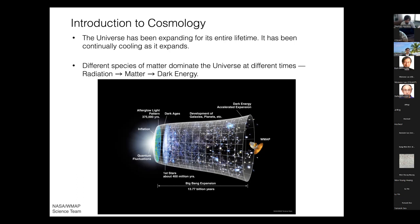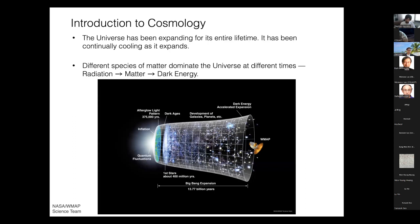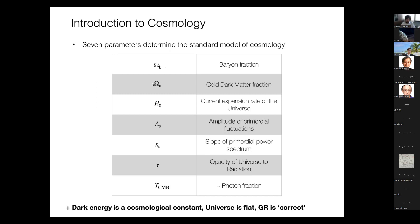Different species of matter dominate at different times: early times are radiation-dominated, intermediate epochs are matter-dominated, and late times are dark energy-dominated. Beyond the background expansion, there are also perturbations — the collapse of matter into gravitational potential wells is described by cosmological perturbation theory, which can be carried from the inflationary epoch all the way through to the present. The standard cosmological model can be described with seven free parameters.